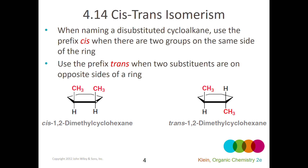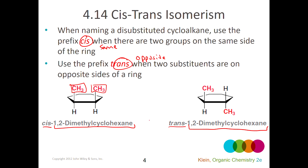Before we get into chapter 5, there's one other main issue: cis-trans isomers. Cis means same and trans means opposite. If I have a ring and both identical groups are on the same side of the ring, that's cis. If identical groups are on opposite sides of the ring, that's trans. We need these terms because otherwise the names of these structures would be identical — both would be 1,2-dimethylcyclohexane. The difference between them is spatial, making them stereoisomers.